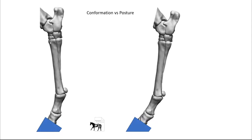The next thing to outline is the difference between posture and conformation. Conformation is the shape or structure of something, like the length of bones — conformation cannot be changed; it is congenital. It can, however, very slowly be affected over long periods of time due to Wolf's Law. Posture, however, can be completely changeable and instantly.